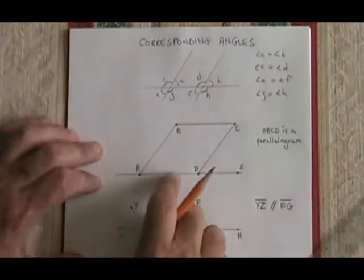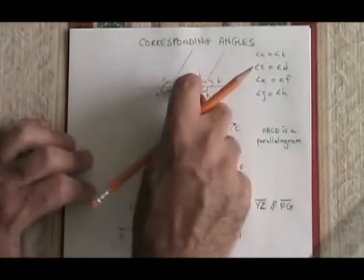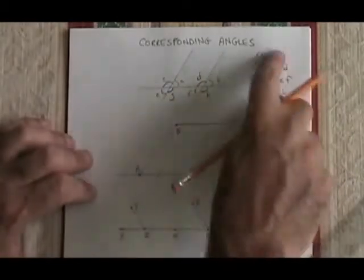So whenever two parallel lines cross the same line, you will have created four sets of corresponding angles.